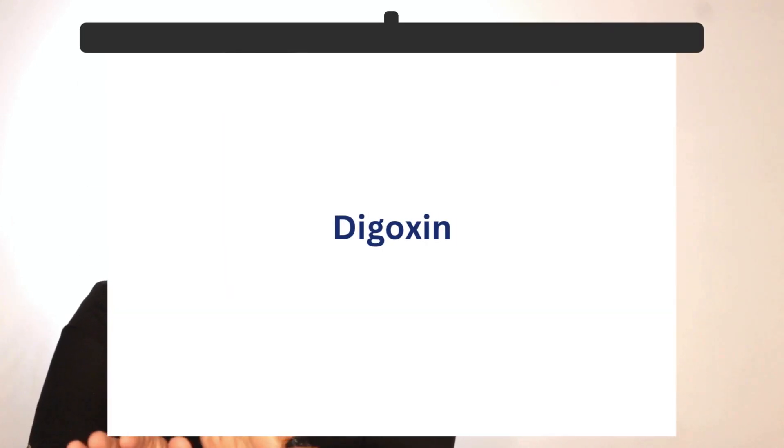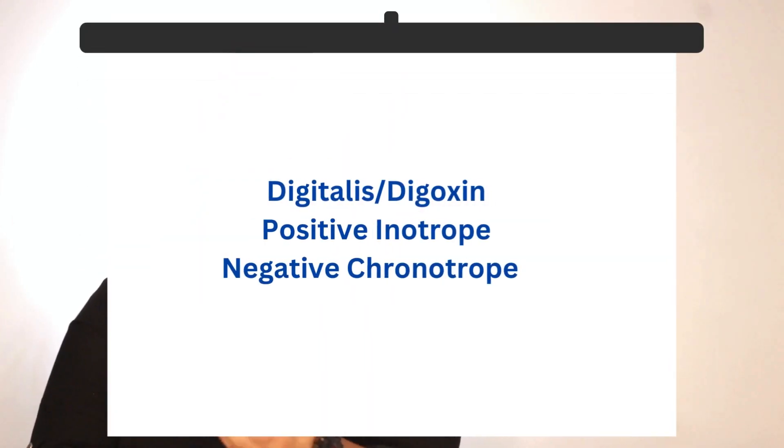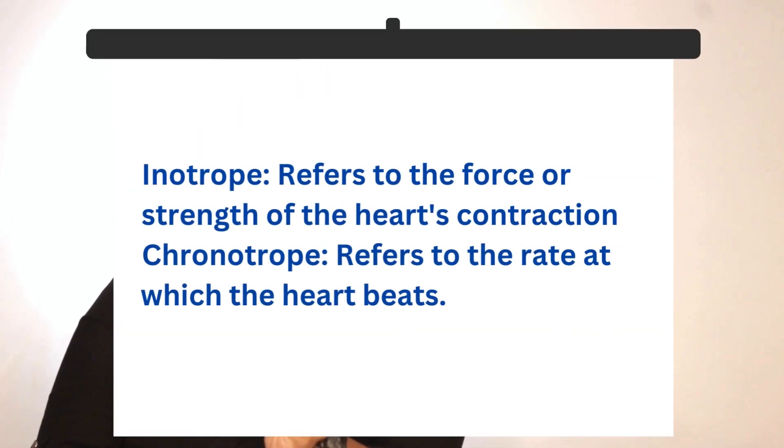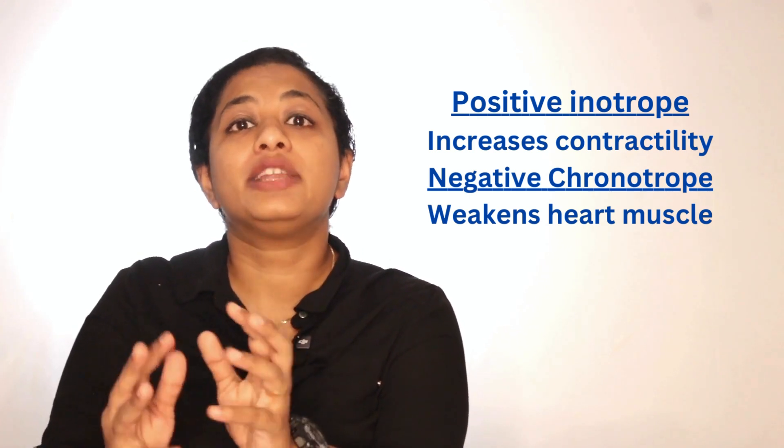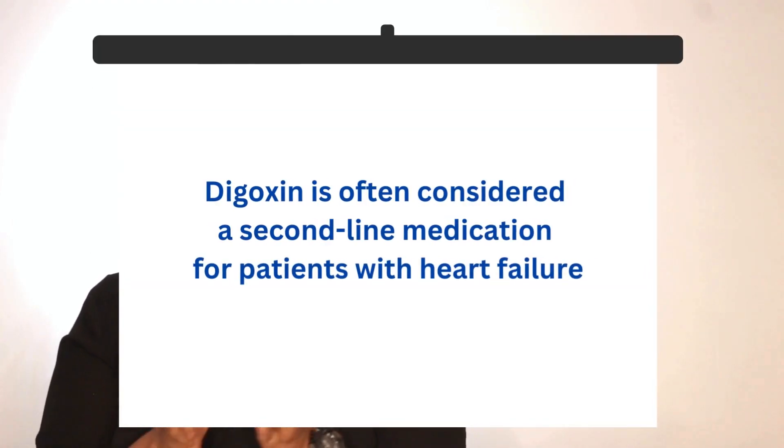The medication we're going to discuss today is possibly the most repeatedly asked question when it comes to cardiac medications — no surprises, it's digoxin. Digoxin is a positive inotrope and a negative chronotrope. Inotropic effect refers to the ability of the heart to contract, and chronotropic refers to the speed at which the heart beats. So positive inotrope means it increases contractility, and negative chronotrope means it reduces the heart rate. Essentially, digoxin reduces the heart rate while increasing contractility, making it a second-line drug of choice for cardiac failure patients.